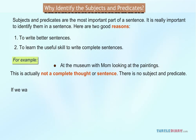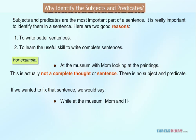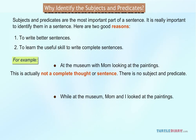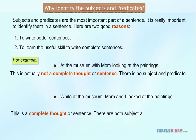If we wanted to fix that sentence, we would say: 'While at the museum, mom and I looked at the paintings.' This is a complete thought or sentence. There are both a subject and a predicate in the sentence.